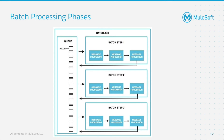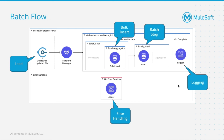Going deeper into load and dispatch and processing, we can see that the record queue is built in the load and dispatch phase. Each record is then processed by each step independently and asynchronously, while the record maintains its state at each step. Failed records will be skipped in subsequent steps, and batch commit can be used as a step to bulk write to an external source. Here's an example of what the batch job scope looks like in a flow in AnyPoint Studio.